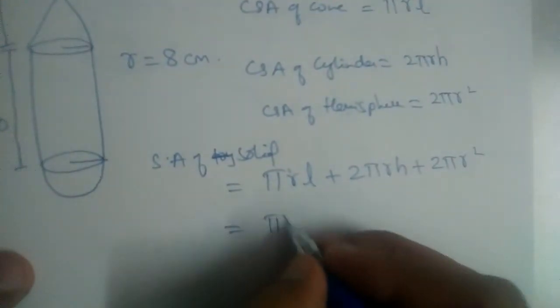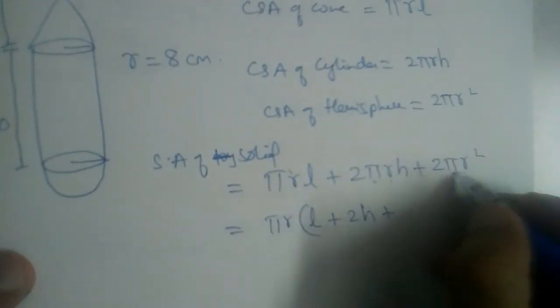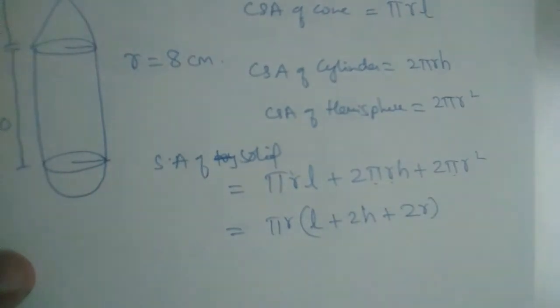Can we take πr common from all these three terms? Yes. L will be left, 2H will be left, and 2r will be left.